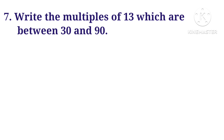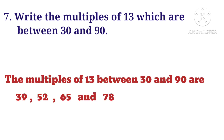Question number 7: Write the multiples of 13 which are between 30 and 90. The multiples of 13 in that range are: 39, 52, 65, 78. Let us verify each by multiplying: 13 x 3 = 39, 13 x 4 = 52, 13 x 5 = 65, 13 x 6 = 78.